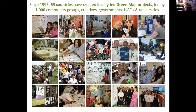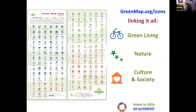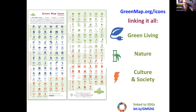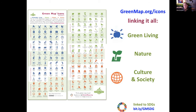We've worked with people in 65 countries so far — all kinds of groups, including municipalities, universities, grassroots groups, and everything in between. There's been lots of creative applications of this concept. Everything is linked by our iconography, which now is 170 symbols. We have two extensions of the iconography: one around recovery and another around food. We've linked them to the SDGs.